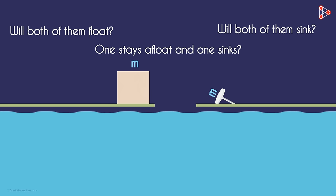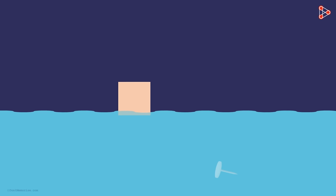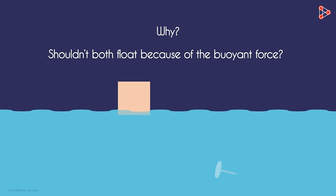Just by intuition, we can say that the wooden block will float and the metal pin will sink. But if they are of the same mass, why does that happen? Shouldn't both float because of the buoyant force?